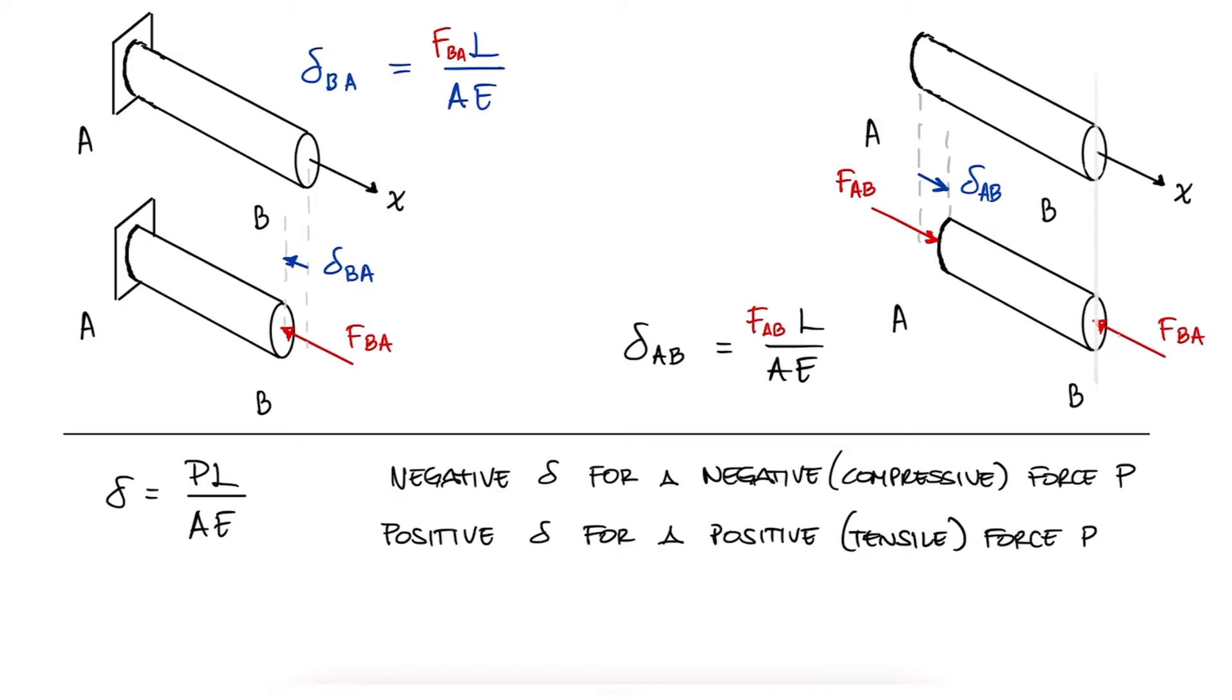To sum these up, we have a negative displacement of B with respect to A, a positive displacement of A with respect to B, and in this case, a negative overall delta, since the internal load within AB is a compressive and therefore negative load.